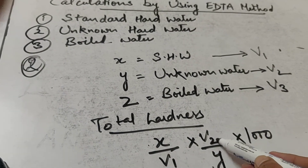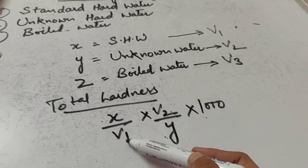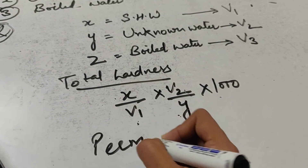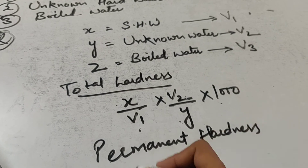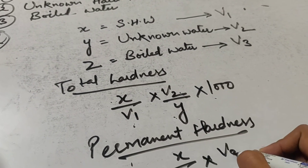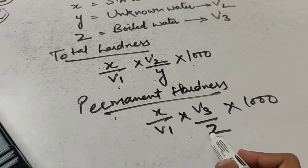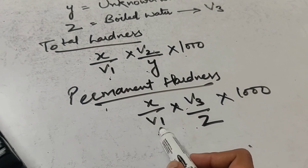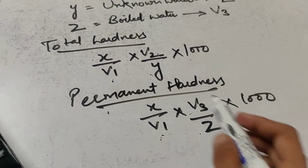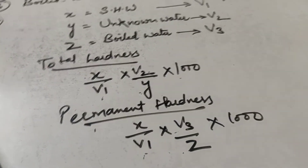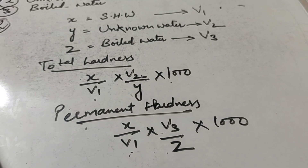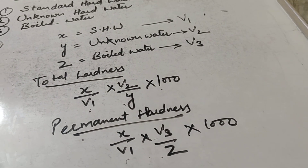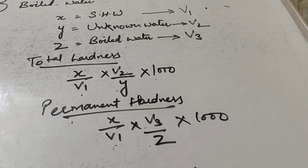Put X and Y as 20 (the water volumes), V2 from the second step burette reading, and V1 from the first step. This gives total hardness. For permanent hardness: (X/V1) × (V3/Z) × 1000, where X is standard hard water, Z is boiled water, V3 is the burette reading for boiled water, and V1 for standard hard water. Subtract permanent from total to get temporary hardness. Hope your viva is now prepared if you have studied the principle, procedure, and calculation parts.